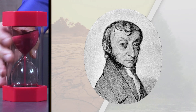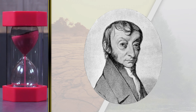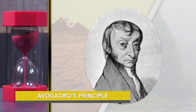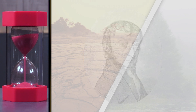In the early 19th century, an Italian physicist named Amadeo Avogadro developed an important scientific law now known as Avogadro's Principle. It states that equal volumes of gases under the same conditions of temperature and pressure will contain equal numbers of molecules. Okay, that's step one.